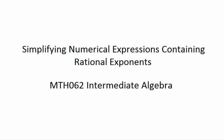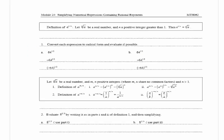In this video we're going to simplify numerical expressions containing rational exponents. The definition of a raised to the 1 over n: let the nth root of a be a real number and n a positive integer greater than 1. Then a to the 1 over n is equal to the nth root of a.